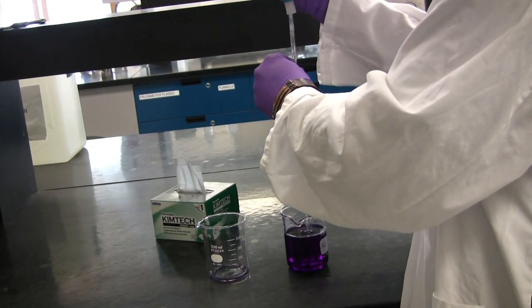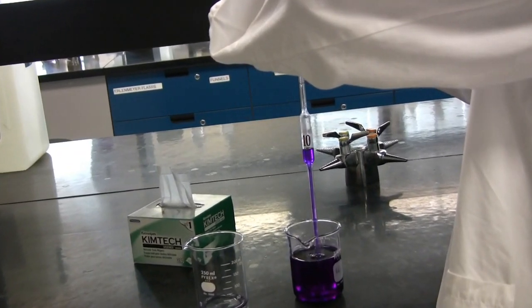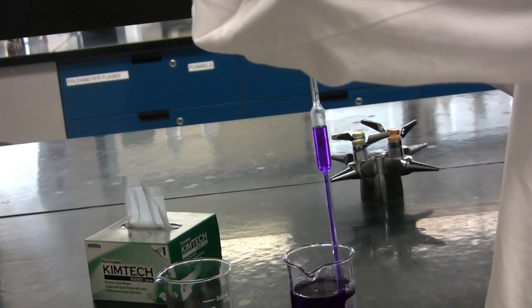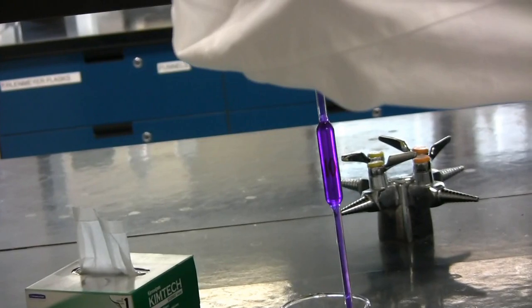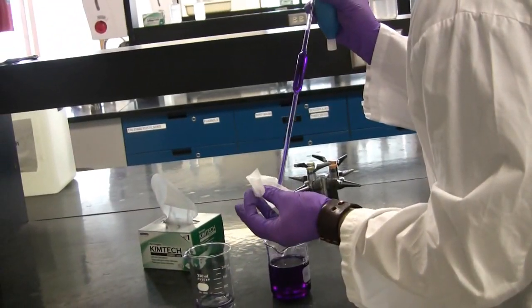Start by withdrawing your solution into the volumetric pipette. Be sure to stop just above the line, as you may contaminate the inside of the pipette bulb. Stop right at this mark and wipe off the excess on the tip with a kim wipe.